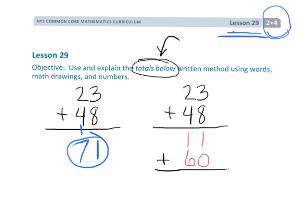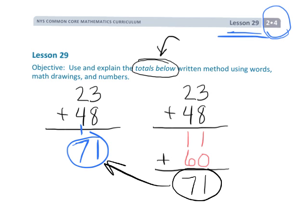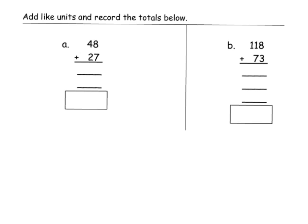And now we're going to add those together. We have one one plus zero ones — that gives us one. And we have one ten plus six tens — that gives us seven tens, so that's seventy. And of course you can see we have the same answer. For the rest of this video we're going to be playing with this method, just because it's worth it to have students try it and understand it.